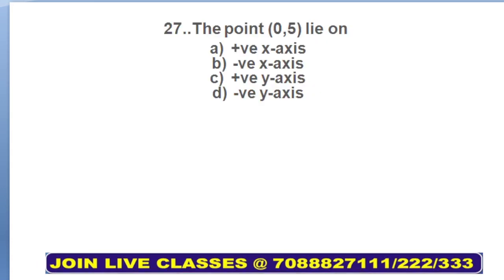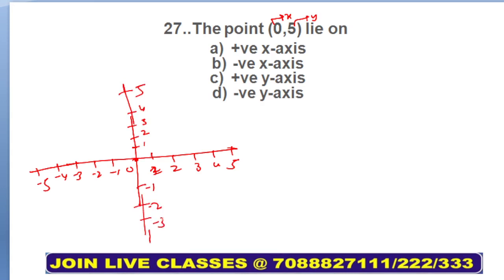Moving on to next question: the point (0, 5) lies on which axis? Here (0, 5) means x is 0 and y is 5. If you draw the quadrants: this is 0, 1, 2, 3, 4, 5, -1, -2, -3, -4, -5, and we have 1, 2, 3, 4, 5, then we have -1, -2, -3 and so on. This will be your x-axis and this will be your y-axis. The point x=0 and y=5, where will it pass through? Line will pass through y-axis. x=0 and y=5 will pass through positive y-axis. This is positive y-axis, so your answer comes out to be C.